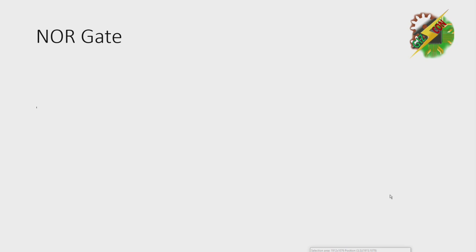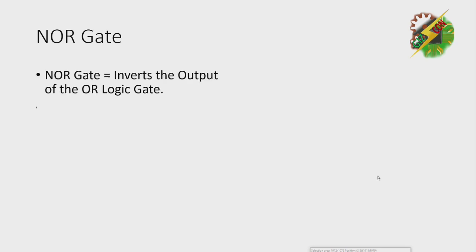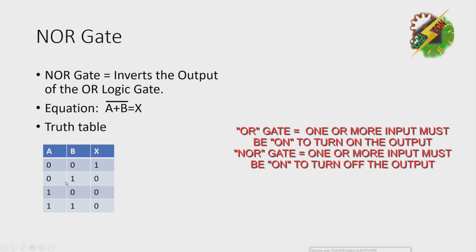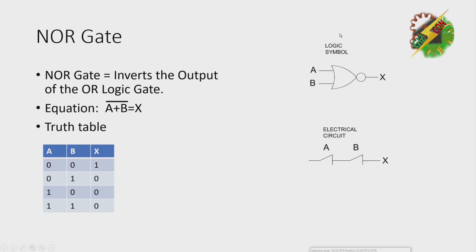Next, we have the NOR gate. NOR gate inverts the output of an OR logic gate. For the equation, we have (A plus B)-bar equals X. Truth table: as you can see, it is the inverted truth table of an OR gate. This is the logical symbol for NOR gate, and this is the equivalent electrical circuit.